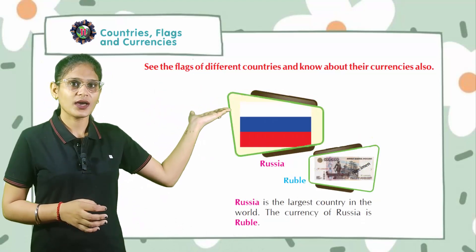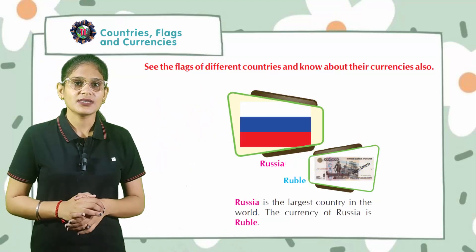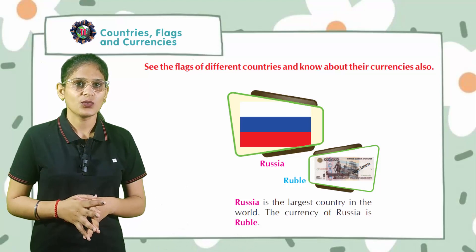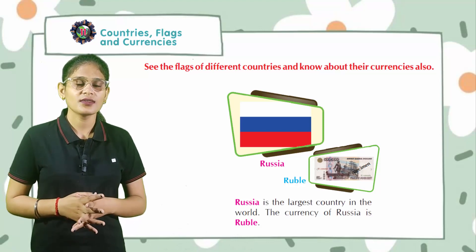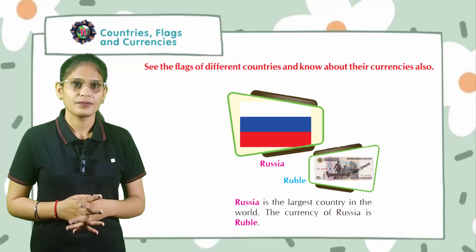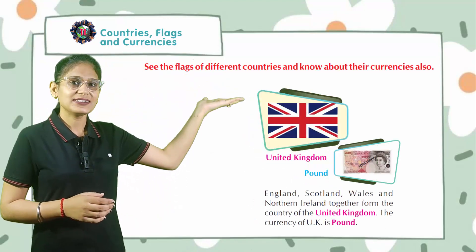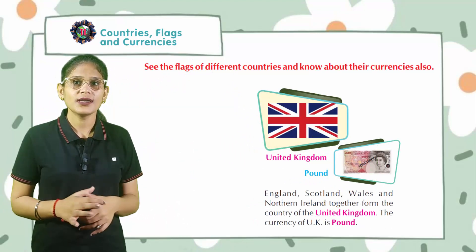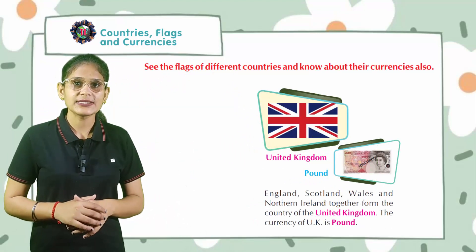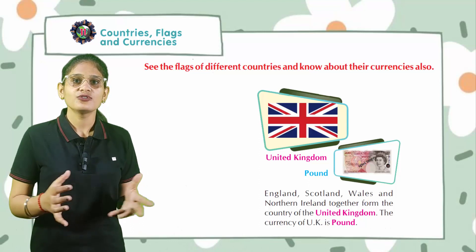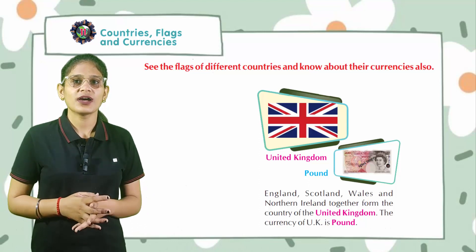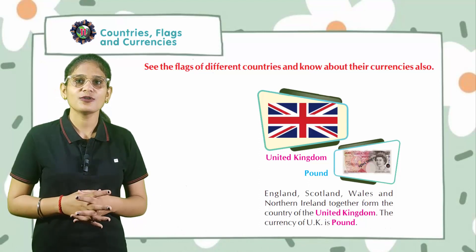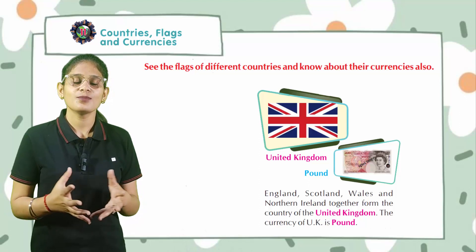Next we have Russia — ruble. Russia is the largest country in the world, and the currency of Russia is ruble. Here is United Kingdom — pound. England, Scotland, Wales, and Northern Ireland together form the country of the United Kingdom. The currency of the UK is pound.